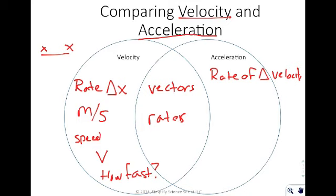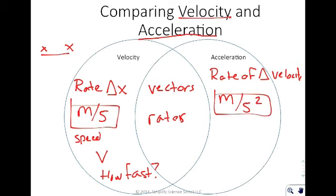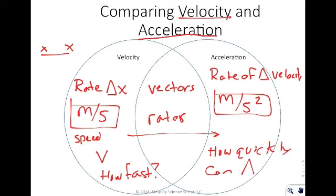Some cars have an incredibly high top speed but take a very long time to get there. Some sports cars, though, can go from zero to 60 in three seconds — that's a rate of acceleration. The unit for acceleration is meters per second squared. The different units are the key to figuring out what quantity you're dealing with; there is no everyday equivalent for acceleration the way speed feels intuitive.